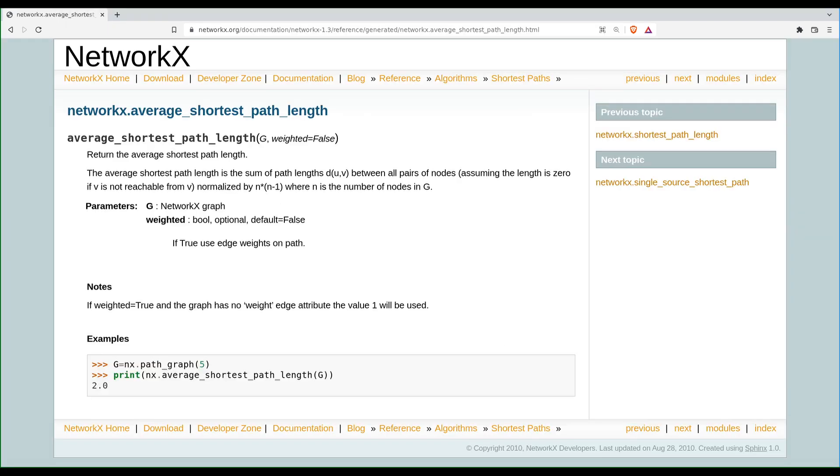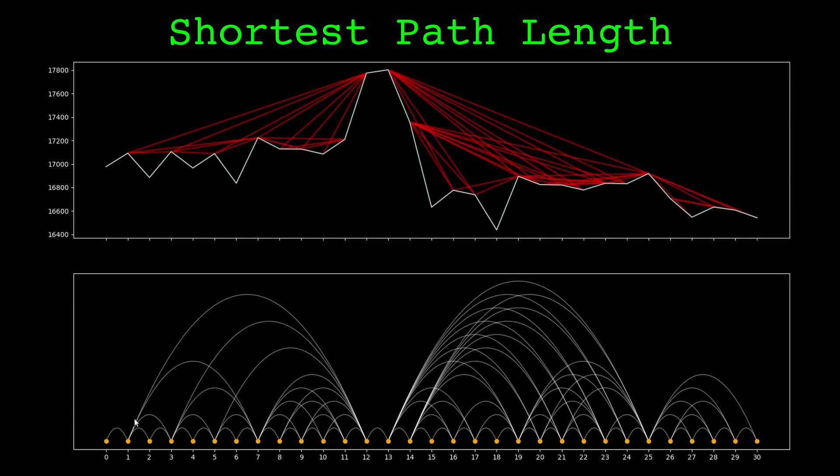One metric I found interesting is the average shortest path length. The shortest path length between two nodes is the minimum number of links that you have to traverse to get from one node to the other. So if you were going from node 1 to node 12, the minimum path length is 1, because there's a direct link between 1 and 12.